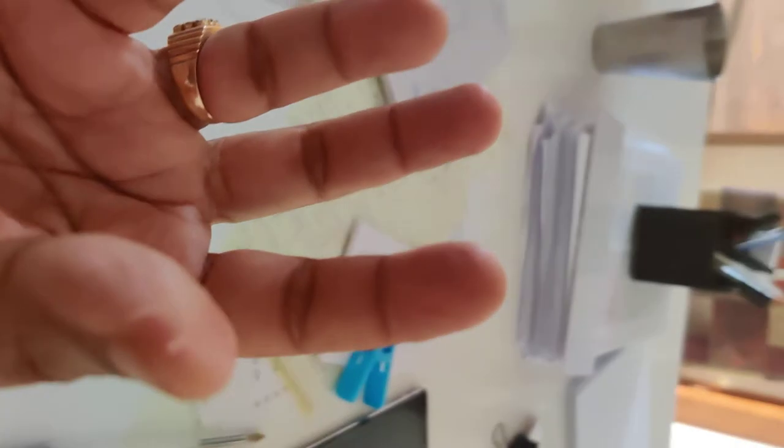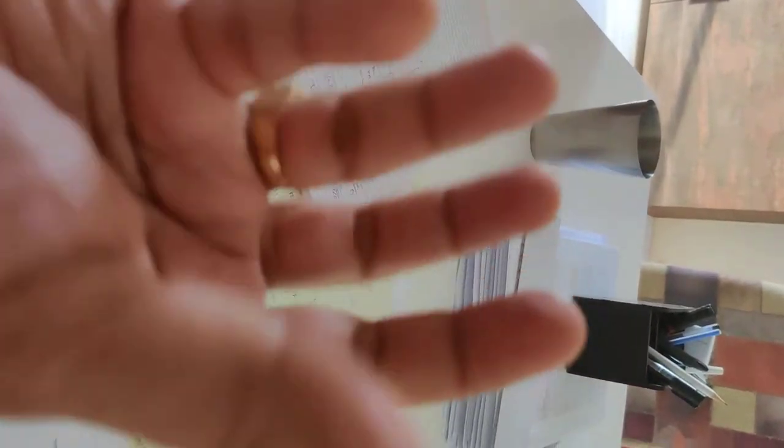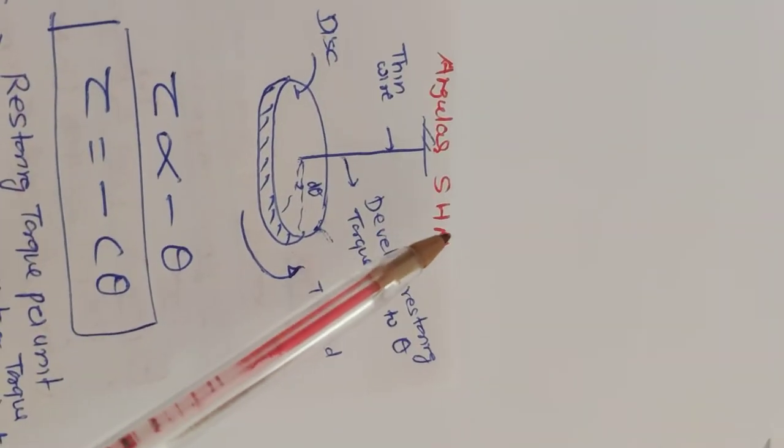This disc starts oscillating like this - anti-clockwise, clockwise, anti-clockwise, clockwise. So what you are seeing, that is nothing but angular SHM.